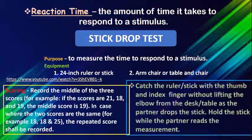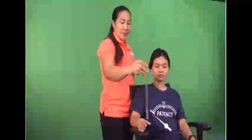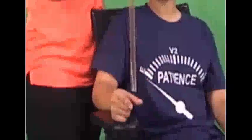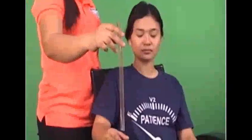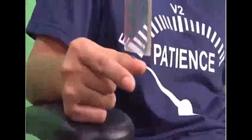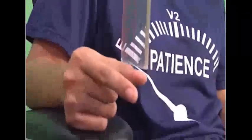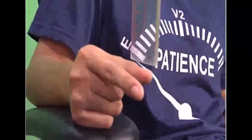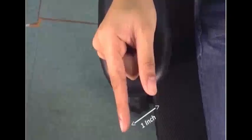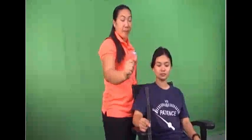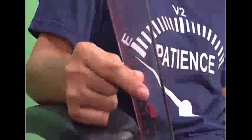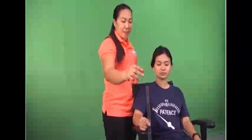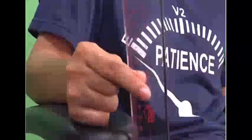Reaction time is the amount of time you respond to a stimulus. Perform it with the stick drop test. Sit next to the table so that the elbow and lower arm rest on the desk comfortably. Place the heel of the hand on the desk so that only the fingers and thumb extend beyond. Index finger and thumb should be at least one inch apart. Catch the ruler with the thumb and index finger without lifting the elbow from the desk as the partner drops the stick. Hold the stick while the partner reads the measurement. Do this twice.